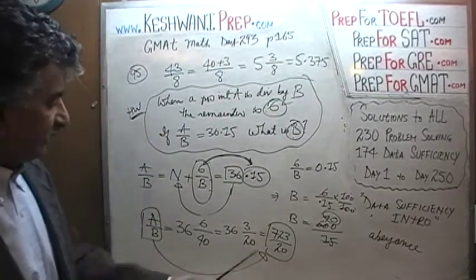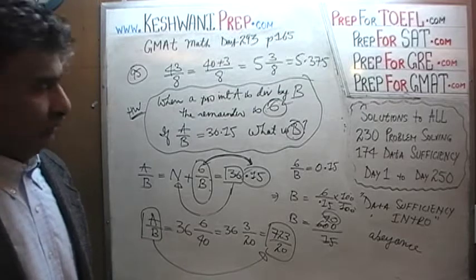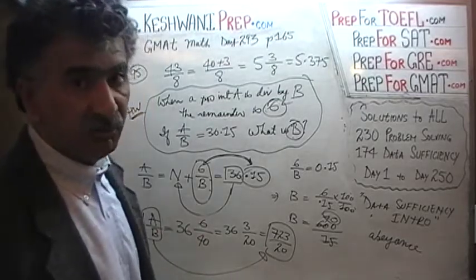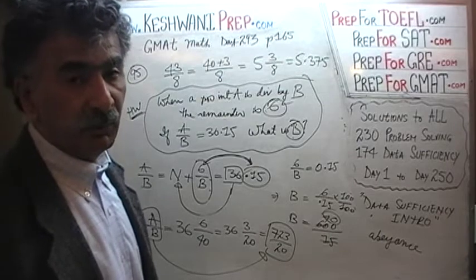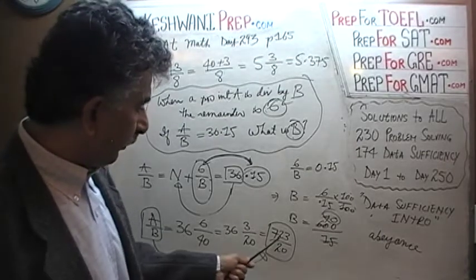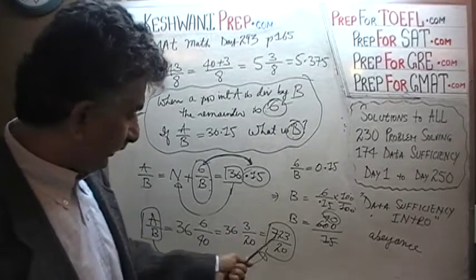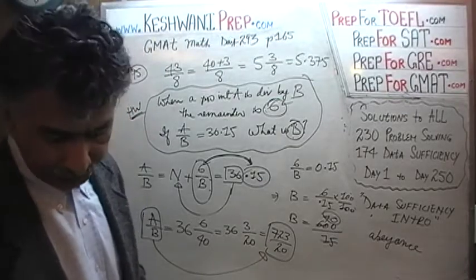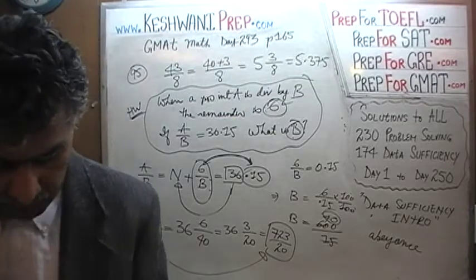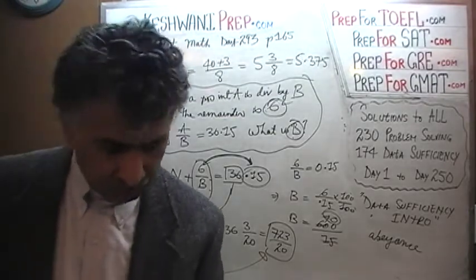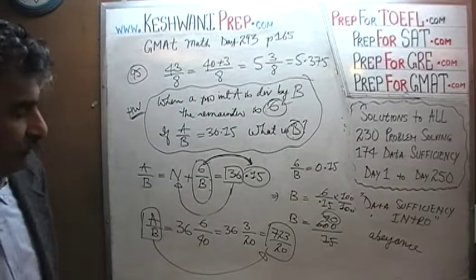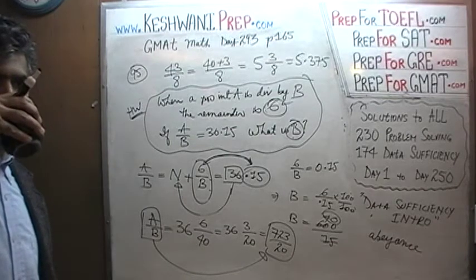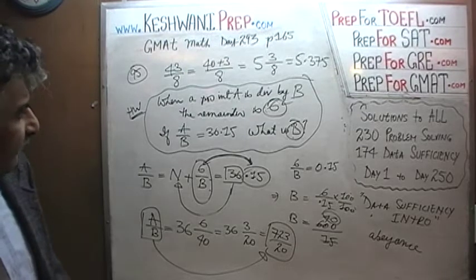Our fraction that we were looking for, a over b, at the end, turns out to be 723 over 20. So depending on how the question is phrased, maybe they will ask, maybe instead of asking how much is b or how much is a, they're asking you what is the fraction, and they give you a whole bunch of answer choices in the fraction form, and this is the right answer. 723 over 20. Let's go to the next one, shall we? Number 96. Question number 96. Just give me one quick, a second here for a break.